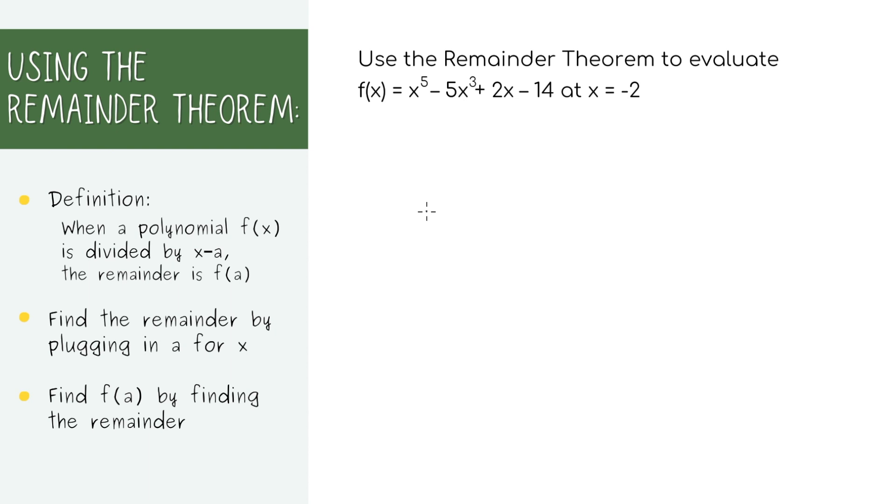Remember how the remainder theorem says that you can find the remainder by finding f of a, which is when you just plug in a into the first polynomial? The flip side of that applies as well. You can find f of a by finding the remainder because they're both equal to each other. So you can find f of negative 2 by finding the remainder when this is divided by x plus 2.